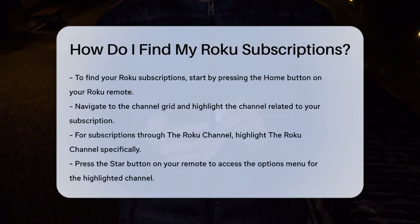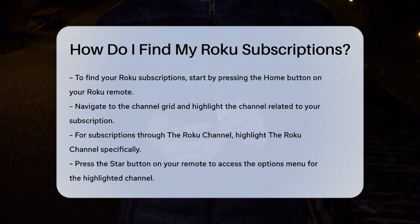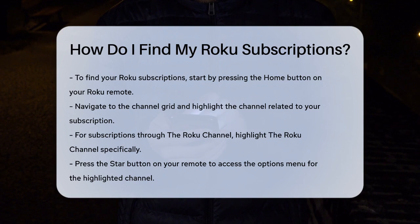First, let's start with your Roku device itself. To find your subscriptions, press the Home button on your Roku remote. This will take you to the home screen. Use the directional pad to navigate through the channel grid and highlight the channel associated with the subscription you want to manage.